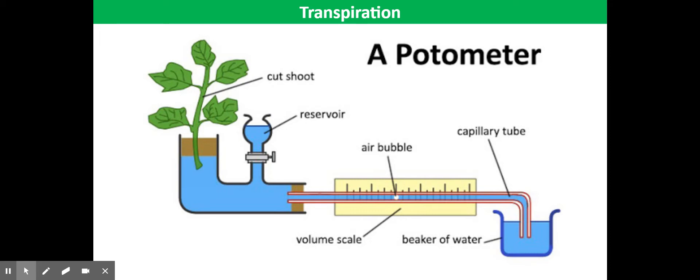Assuming that the cells are turgid, more than 95% of water taken up is lost by transpiration. So this gives a reasonable estimate of transpiration rate.